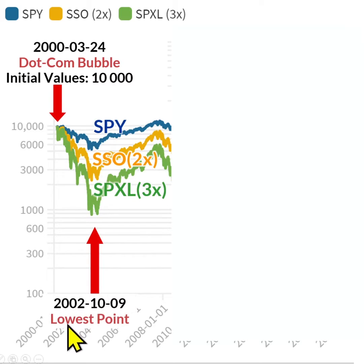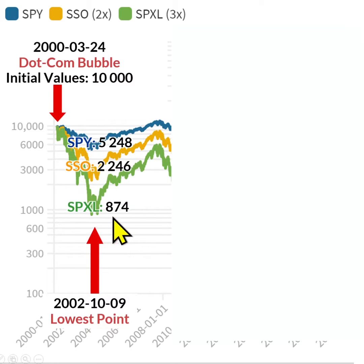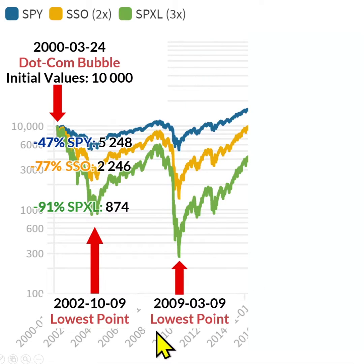The lowest point was in 2002. SPY would have been $5,200; SSO, $2,200; and SPXL, $870. SPY dropped 47%, SSO minus 77%, and SPXL minus 91%.